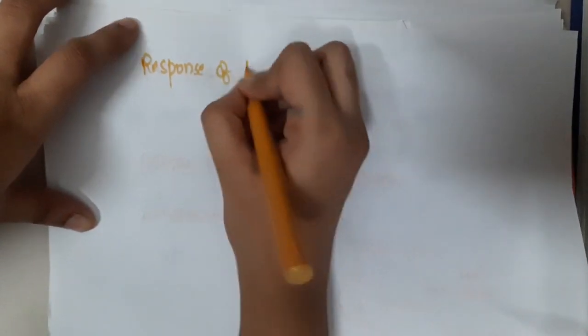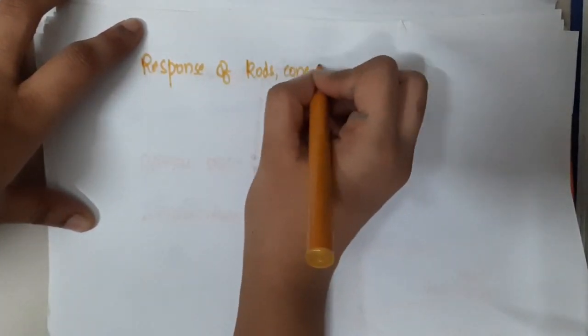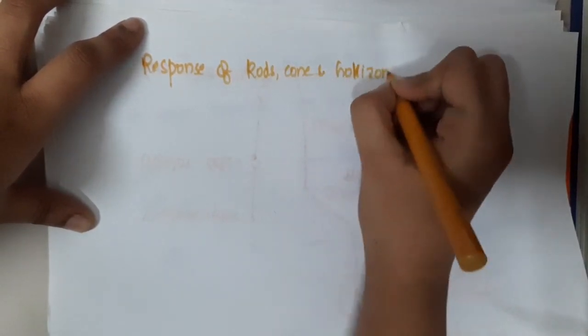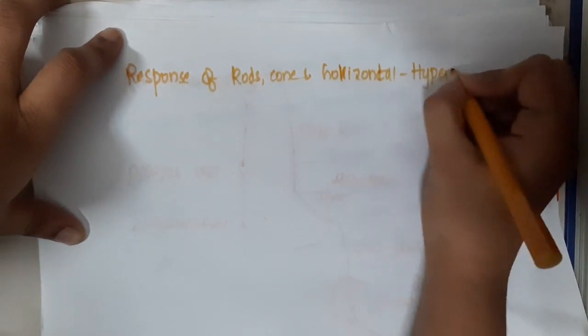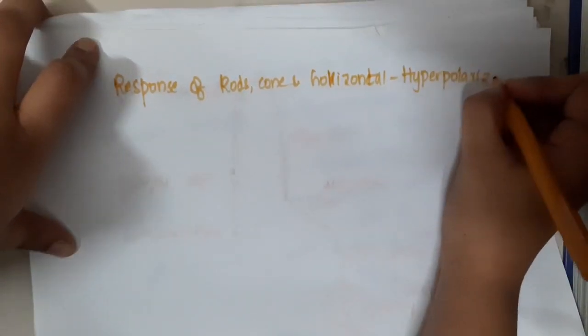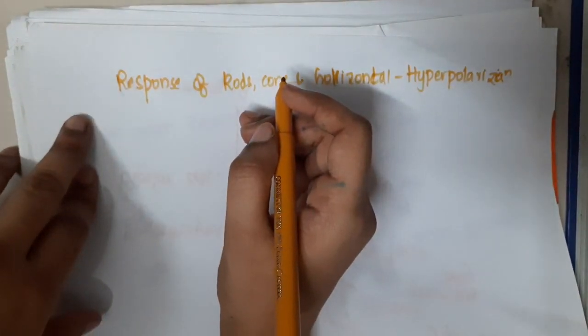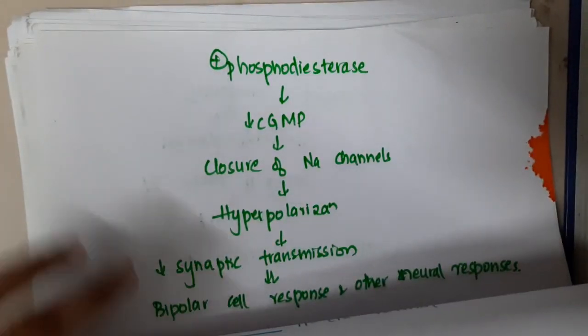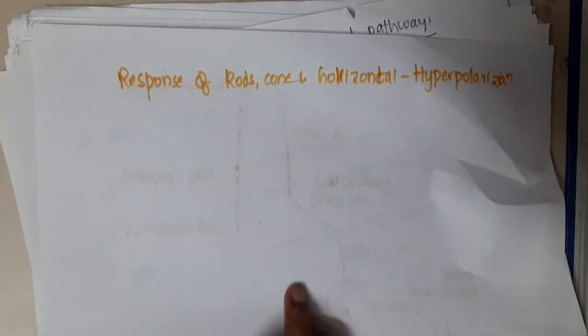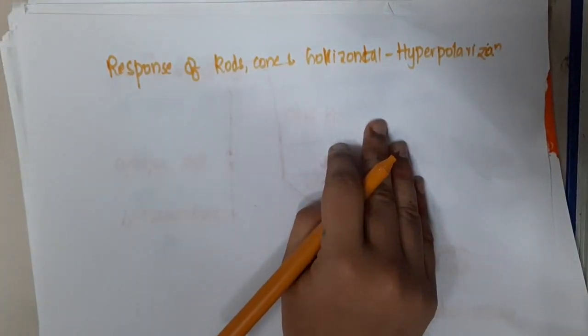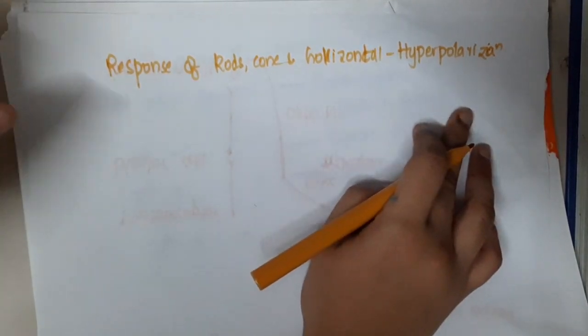Some one-liners asked in examinations: the response of rods, cones, and horizontal cells is hyperpolarizing, because of closure of sodium channels, resulting in no sodium influx. These rods, cones, and horizontal cells undergo hyperpolarization.